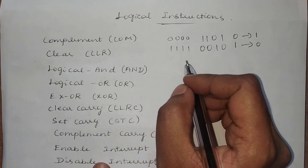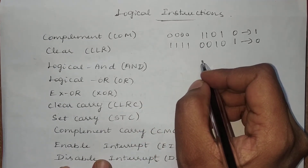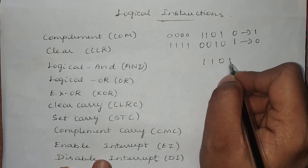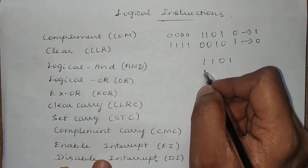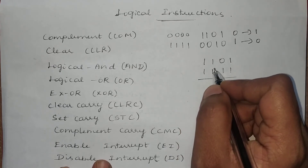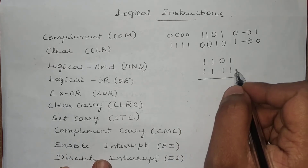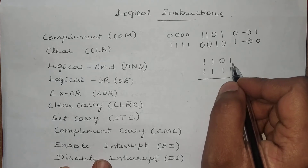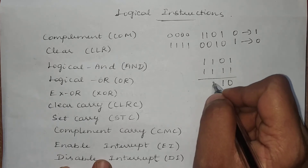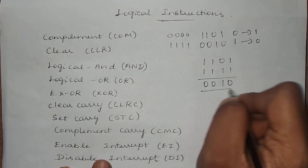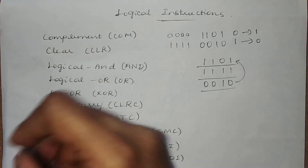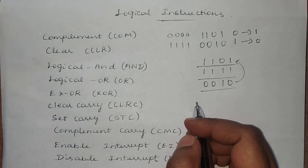In the computer, complementation can be done with the help of the XOR operation. For example, if the input is 1101 and you perform XOR with all 1s as the second data, XOR means if both bits are the same the result is 0, and if both are different the result is 1. So the XOR result of 1101 with 1111 gives 0010, which is nothing but the complementation of the first data. This is how complementation is done in the computer.